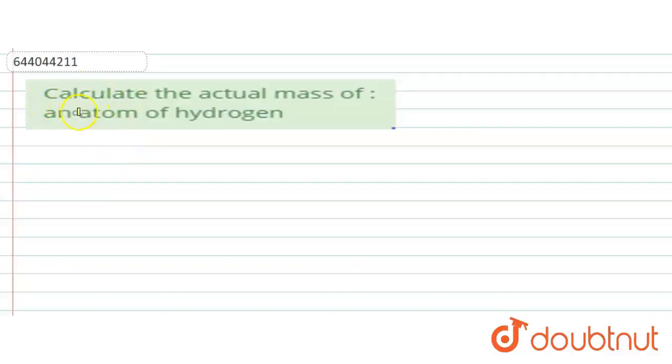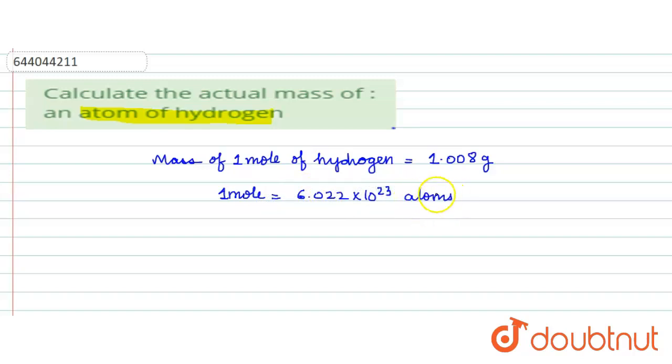Calculate the actual mass of an atom of hydrogen. As we know that mass of one mole of hydrogen is 1.008 gram, and one mole contains 6.022 into 10 to the power 23 atoms.